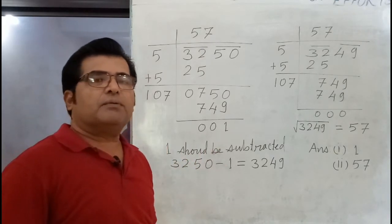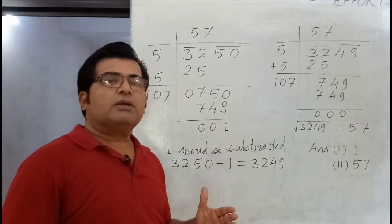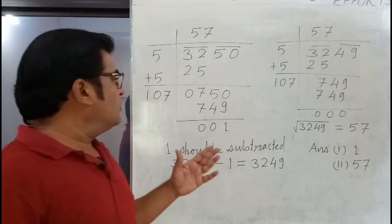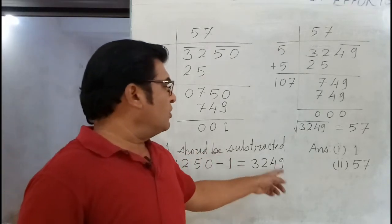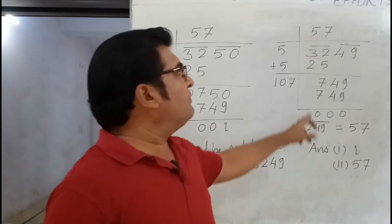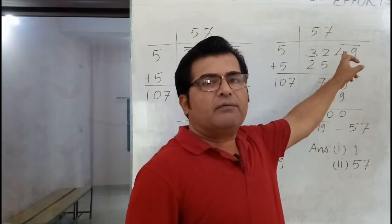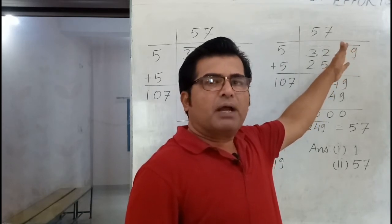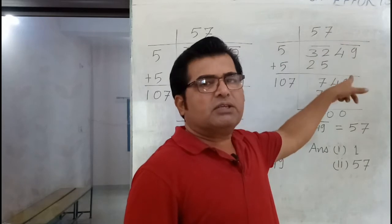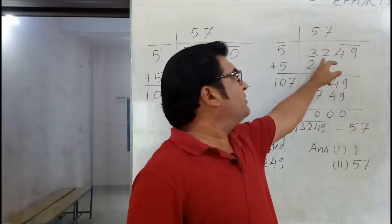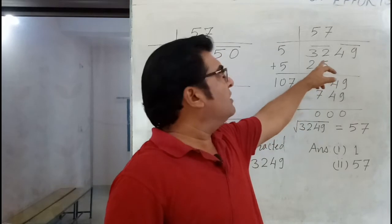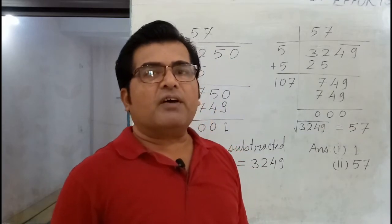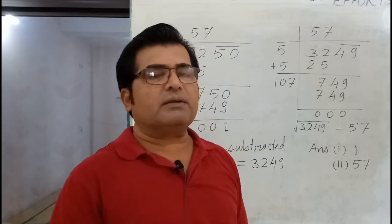So 1 is the required number — 1 should be subtracted from the given number. The question also asks us to find the square root of the number so obtained. After subtraction we got 3,249, so we now find the square root of 3,249, which can be done either by the division method or by prime factorization.